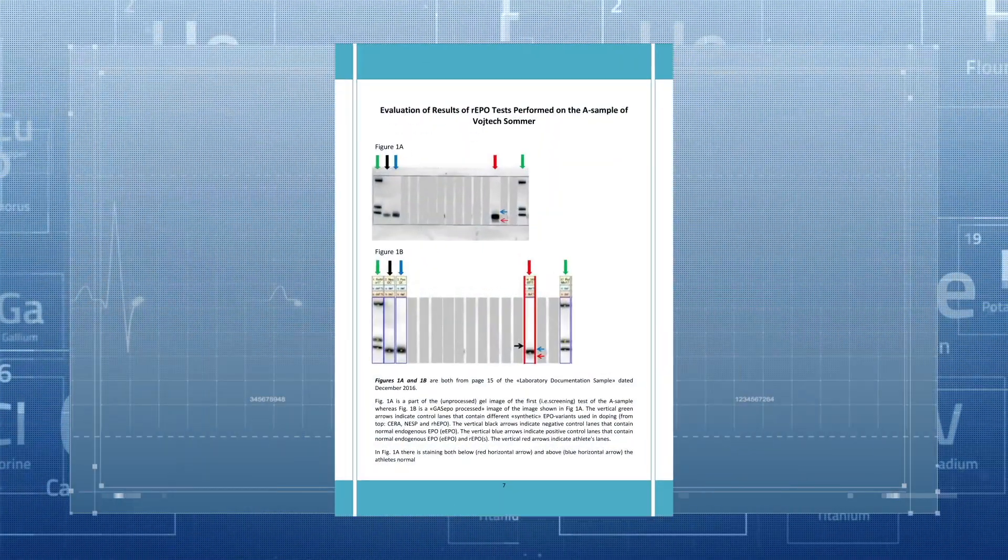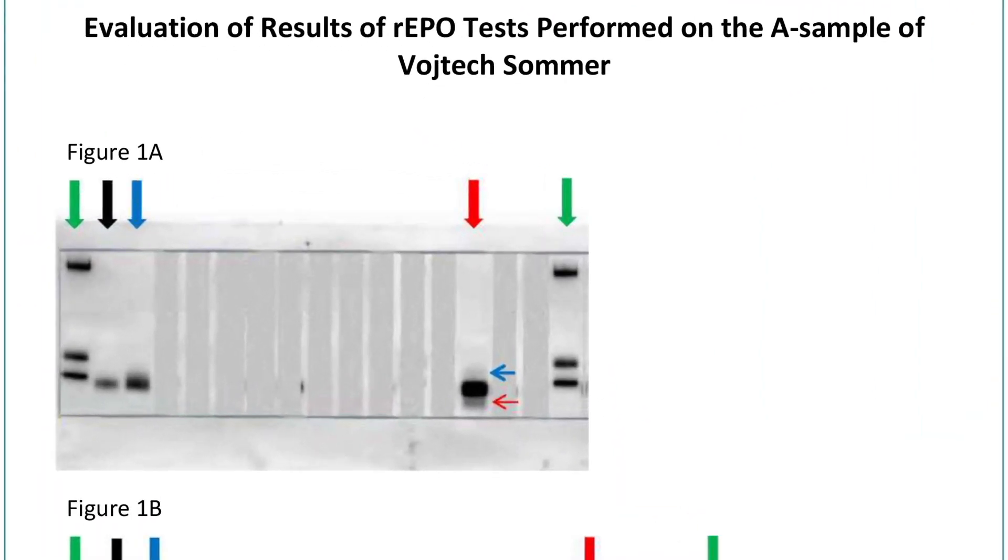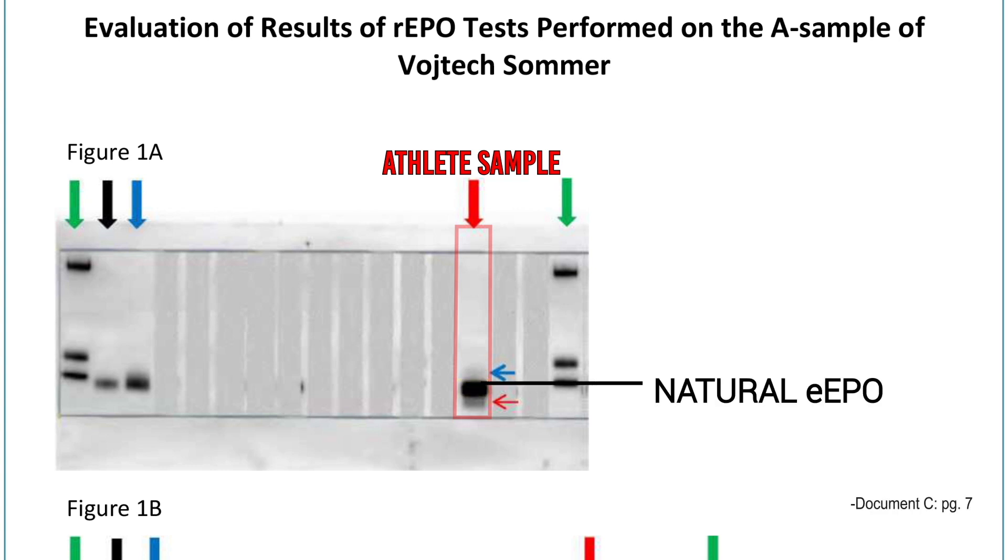To detect EPO, the laboratory used an SDS page test, which is then compared against positive and negative results. Highlighted in red is Sommer's sample. The darkest bands are naturally occurring E-EPO. The shadow above, marked in blue, is what the laboratory claims as the banned substance, R-EPO.